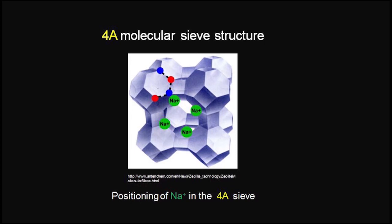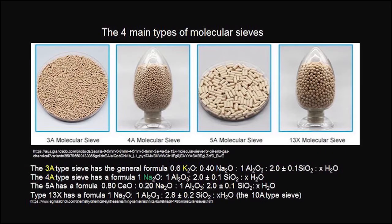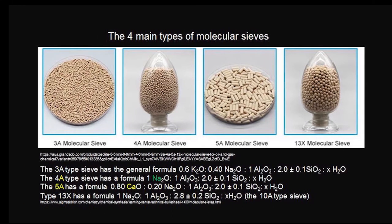For example, 4A molecular sieves has a pore opening of approximately 4 angstroms. If the sodium ion is exchanged with larger potassium ion, the pore opening is reduced to 3 angstroms. On ion exchange with calcium, the pore opening increases to 5 angstroms.